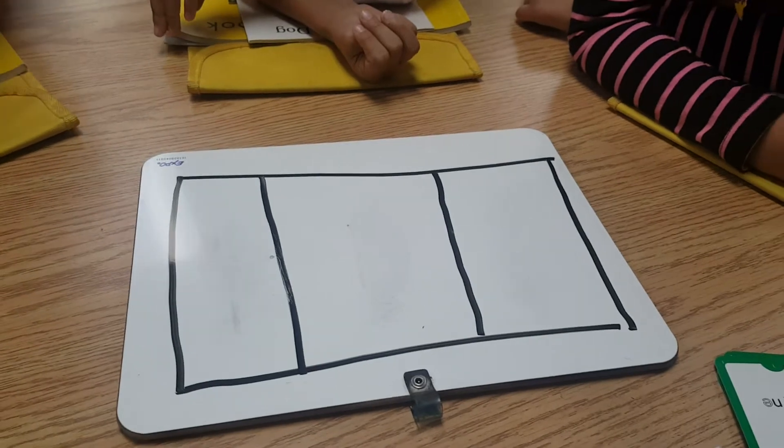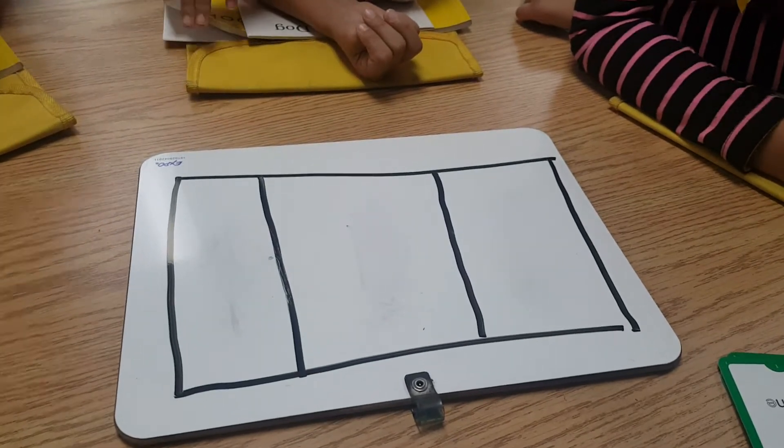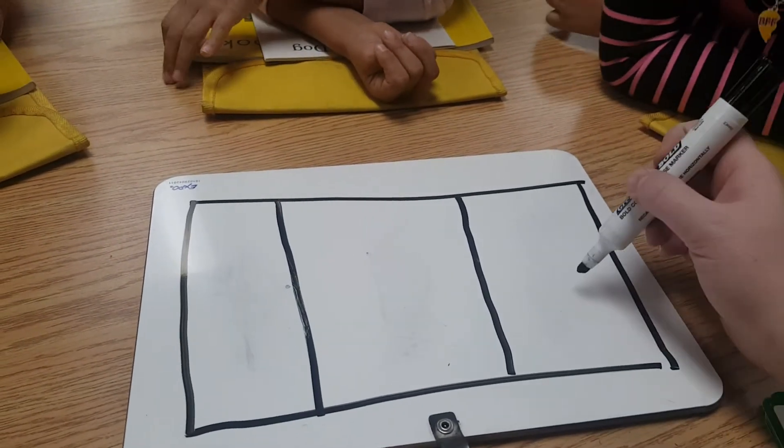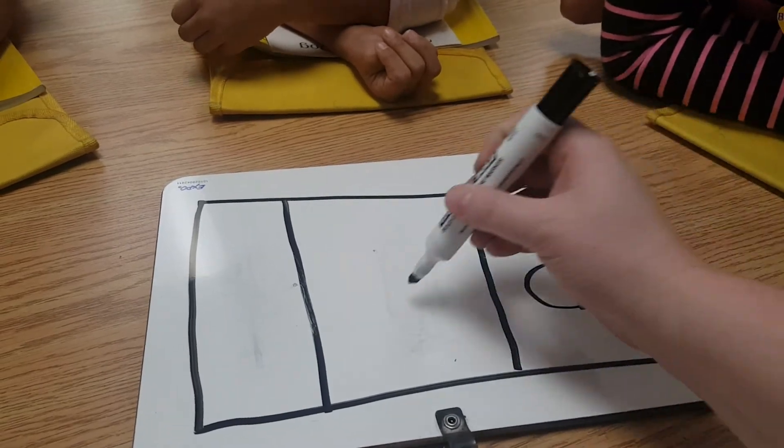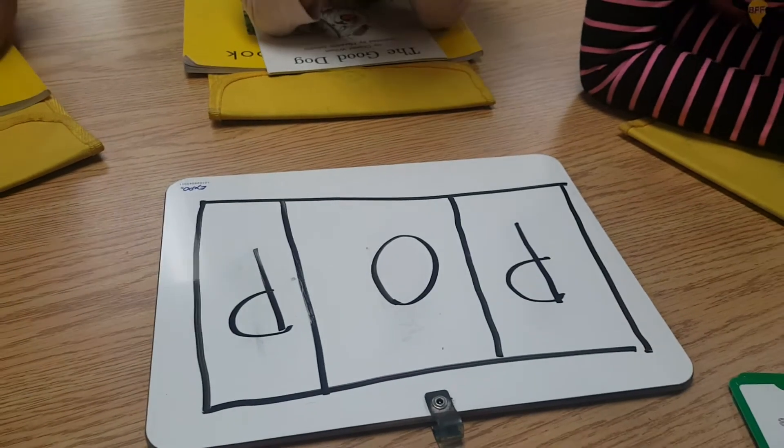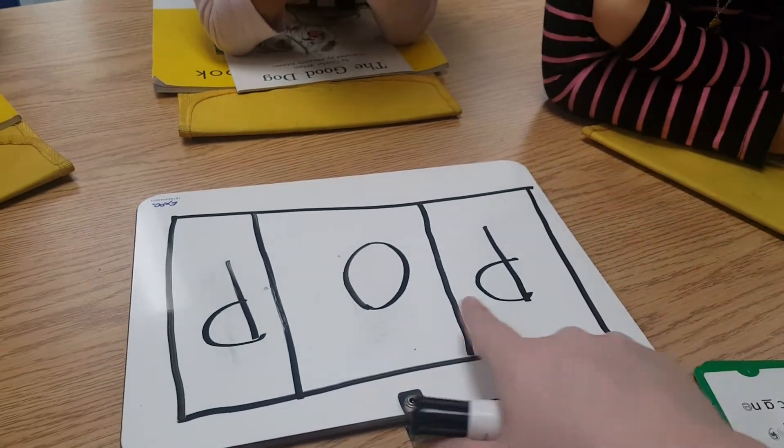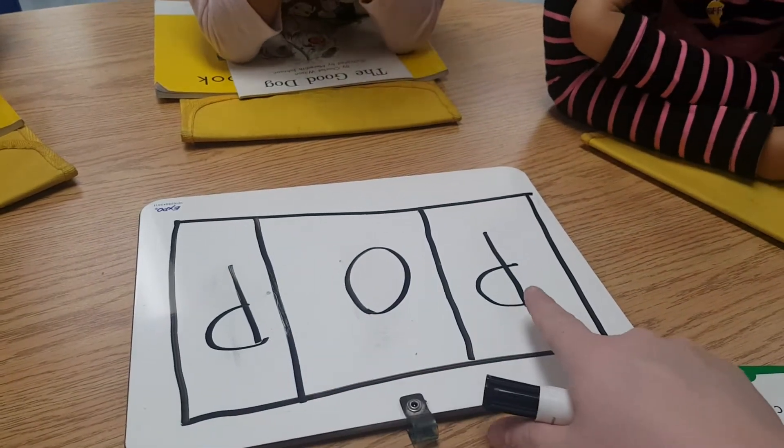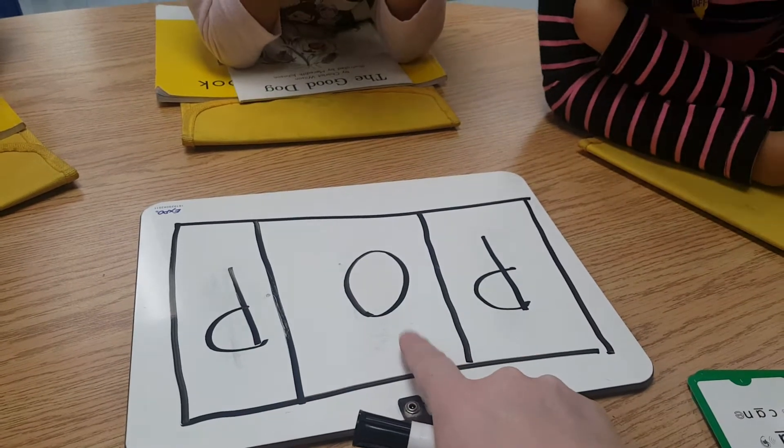Okay, next let's try the word pop. Ready? P-O-P. As you can see on both of these words, I have three sounds and I have three letters. And the vowel is in the middle.